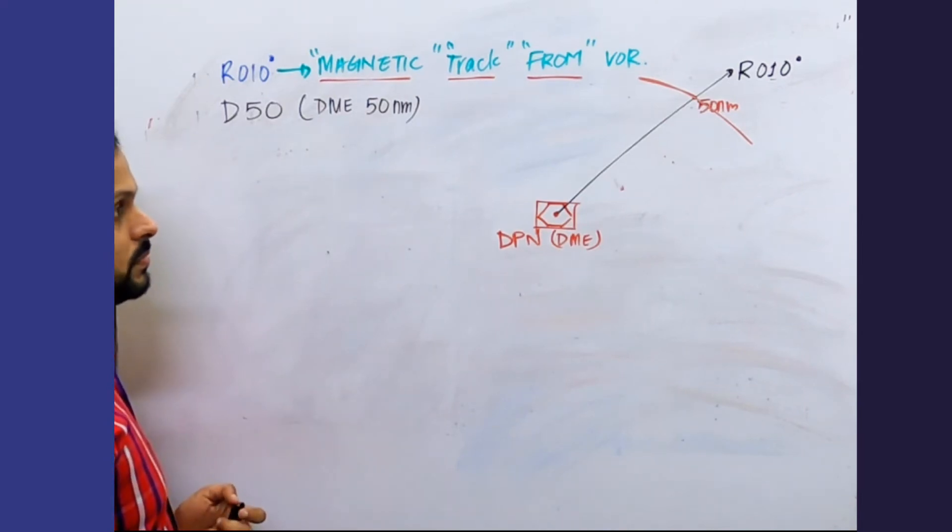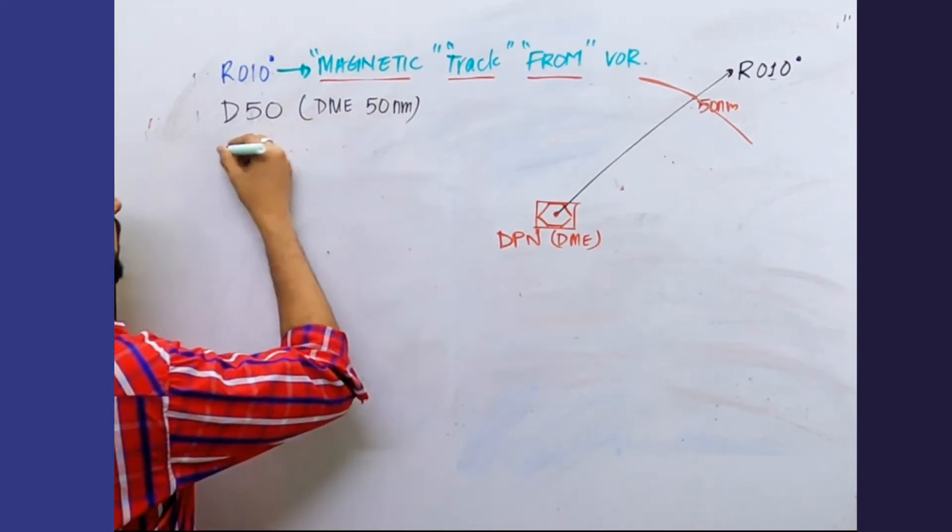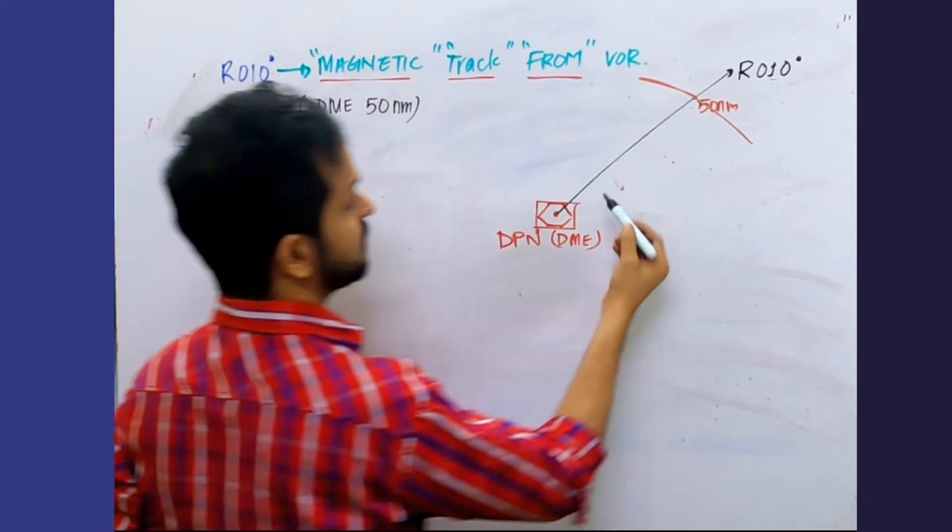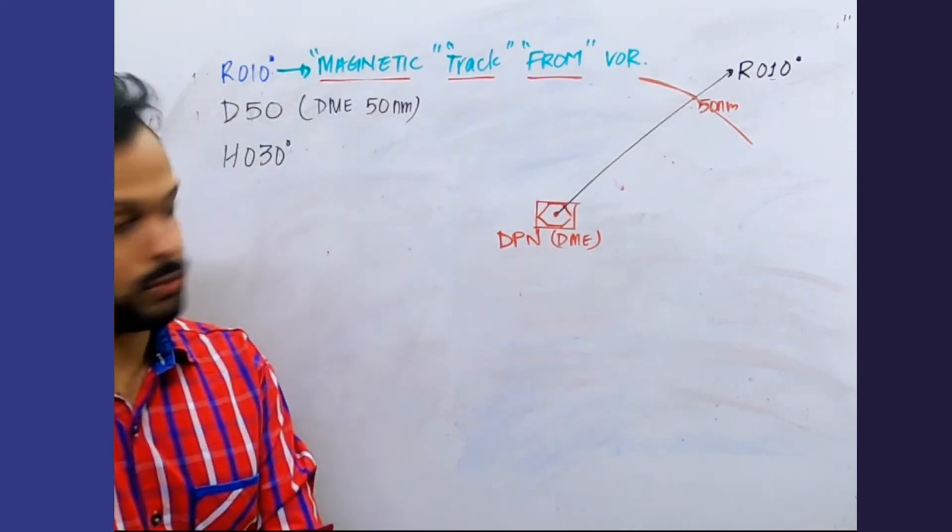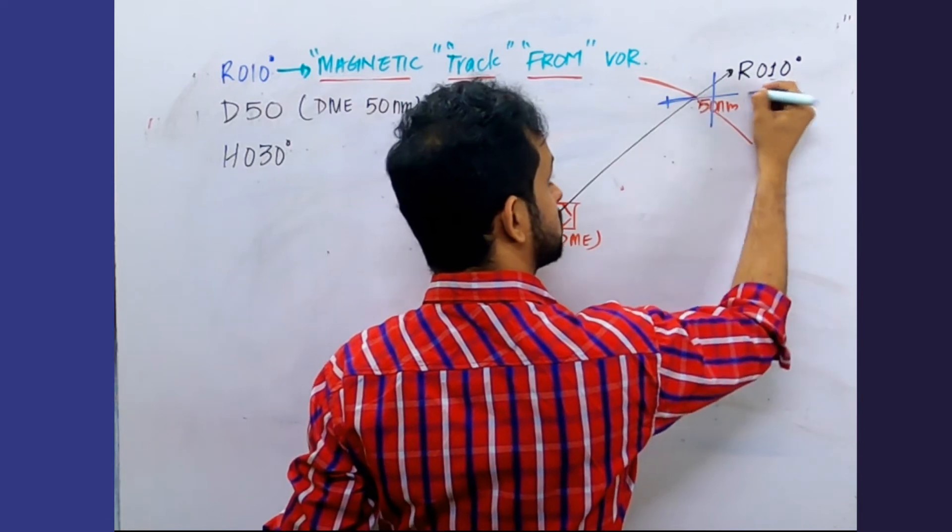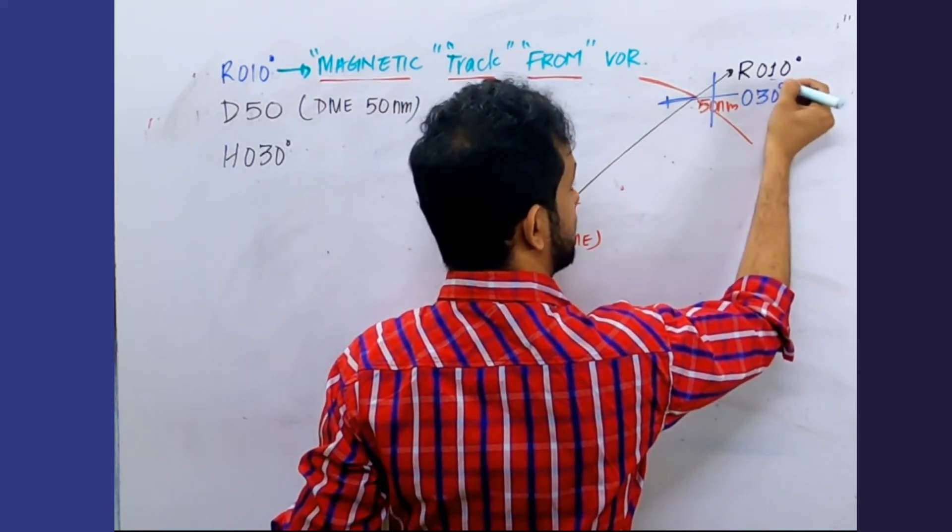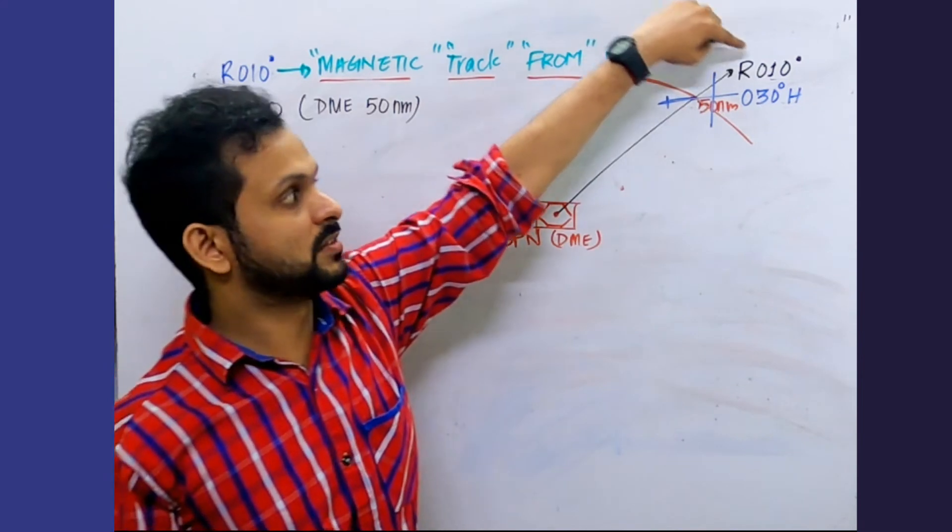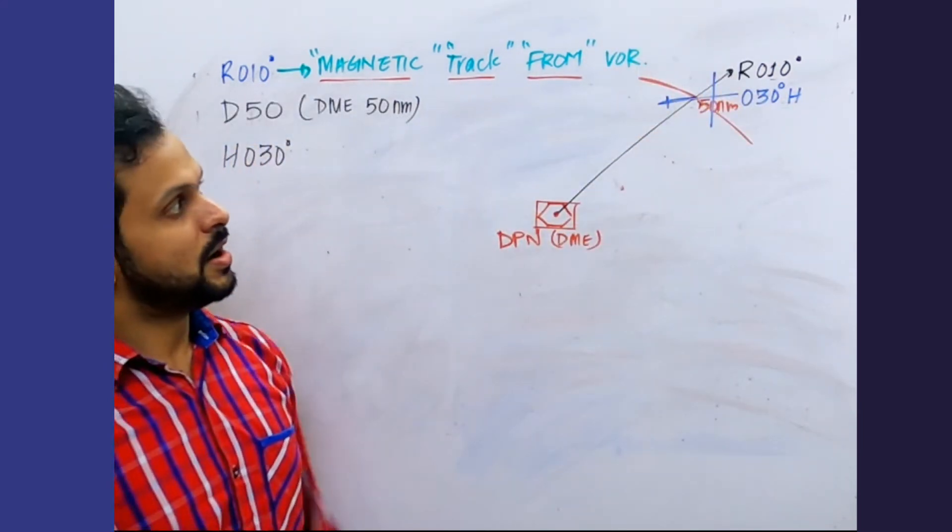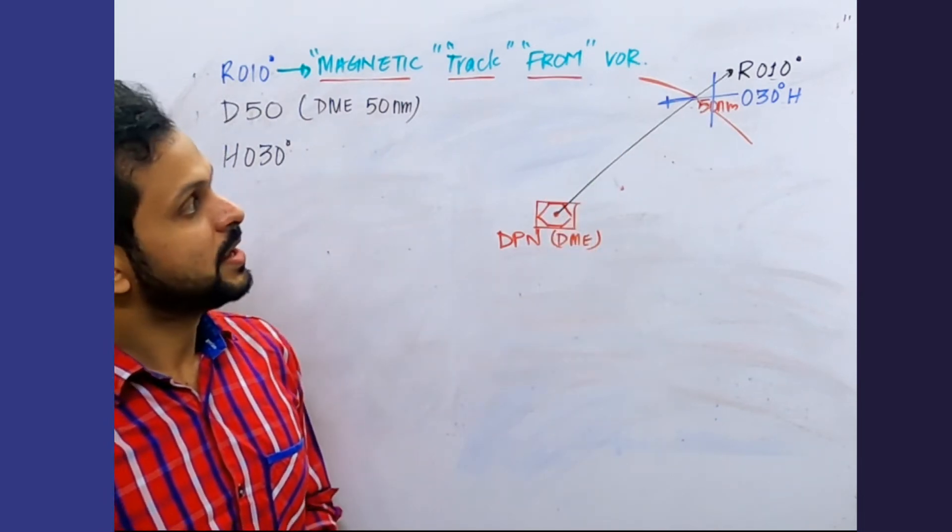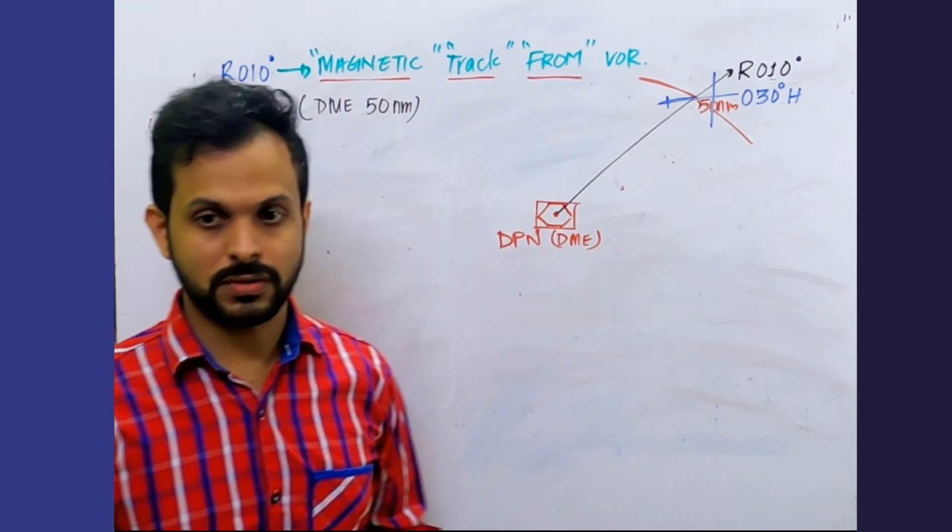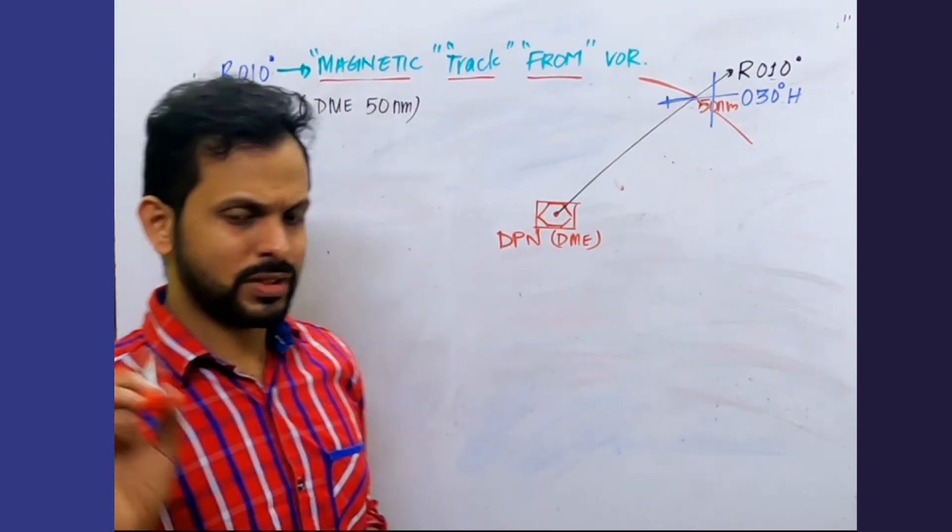Let's assume a heading for the aircraft. Give me a heading. 030. Alright, so heading is 030. This is 010, therefore 030 should be like this. As I said, this doesn't look like 030 because this doesn't look like 010, it's off drawn, but you get the point. The aircraft is now moving away from the station. The question here is I need to fix my position.